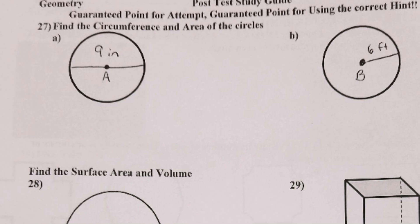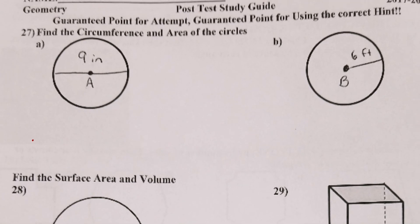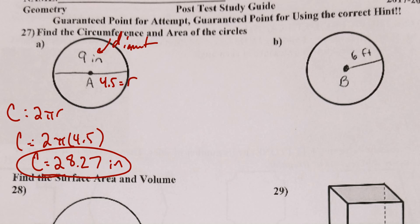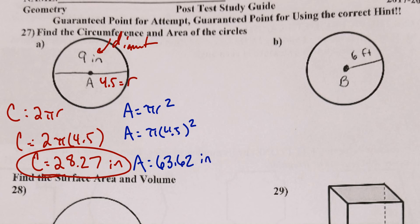Numbers 27 and 28 are circles. Circumference = 2πr or π × diameter. That's the diameter, so the radius is 4.5. C = 2π(4.5) ≈ 28.27 inches. For area: A = πr² = π(4.5)² ≈ 63.62 square inches.